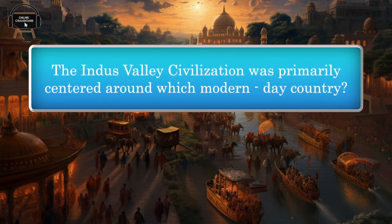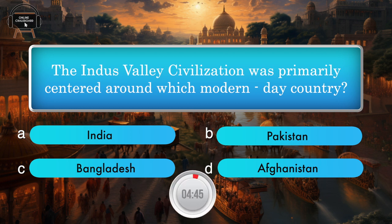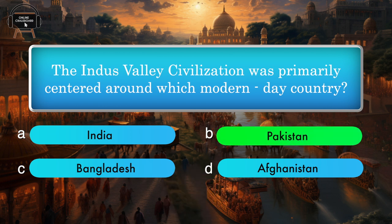The Indus Valley civilization was primarily centered around which modern-day country? India, Pakistan, Bangladesh, Afghanistan. Answer: Pakistan.